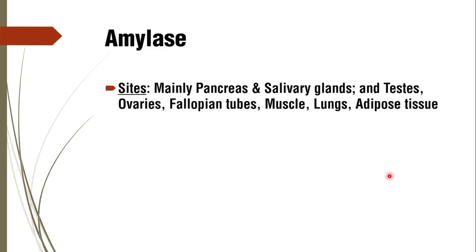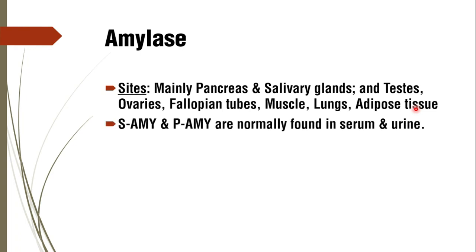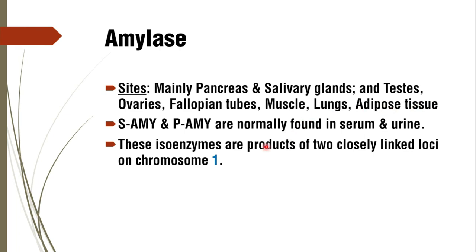Amylase is present in high concentration mainly in the pancreas and salivary glands because they digest starch. Other tissues like testes, ovaries, fallopian tubes, muscles, lungs, and adipose tissue also produce amylase. Salivary amylase and pancreatic amylase are two isoenzymes normally found in serum and urine, and they are products of two closely linked loci.